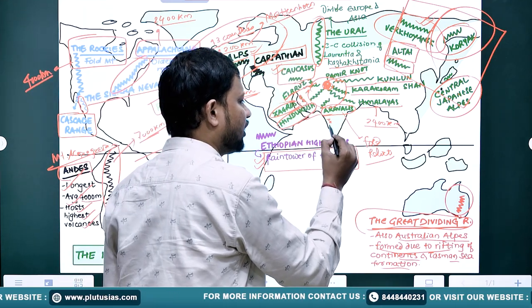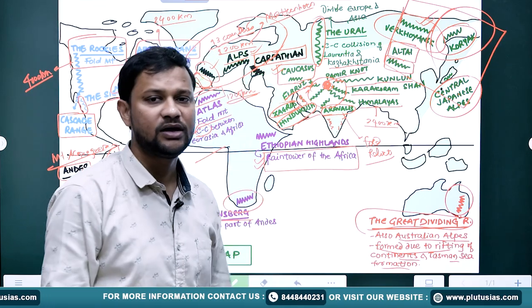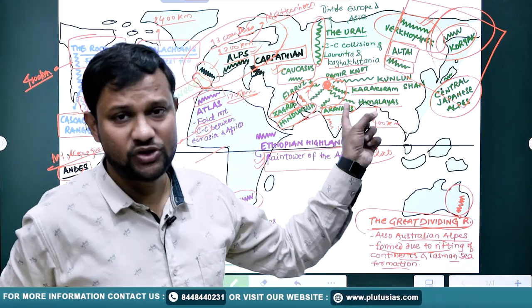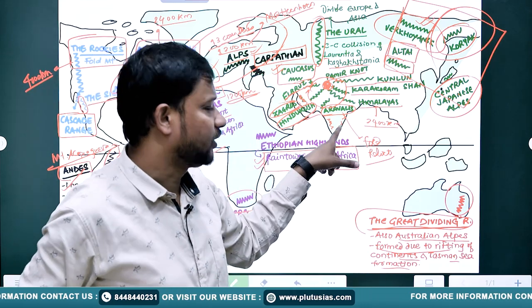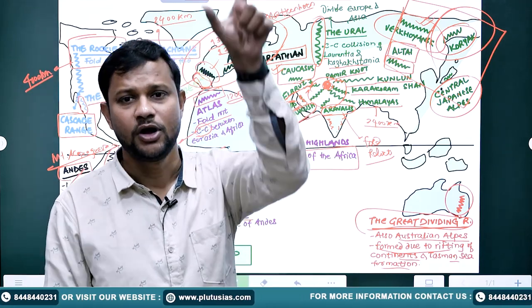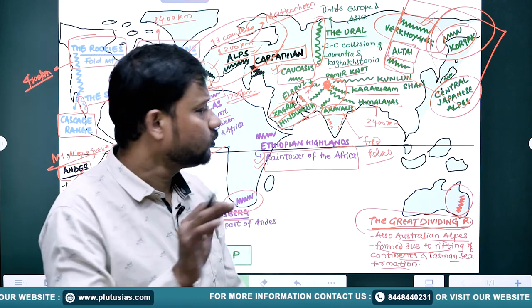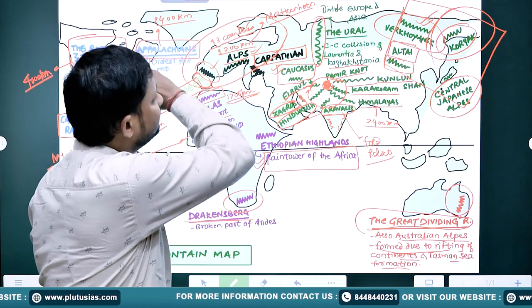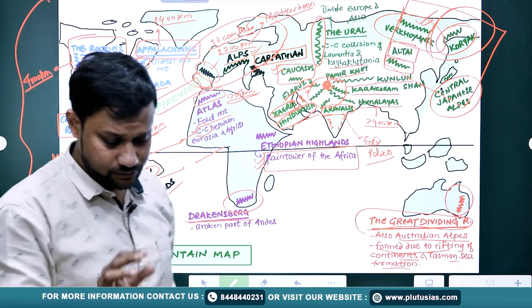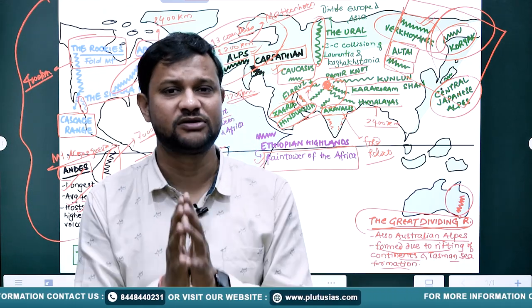In India you will find the Western Ghats and the Eastern Ghats as fold mountain chains. I have already made that video — you can check it in the checklist. So this covers all world mountain ranges.